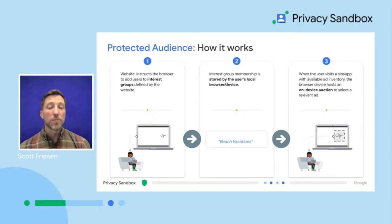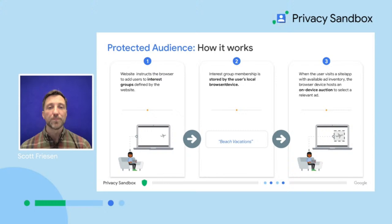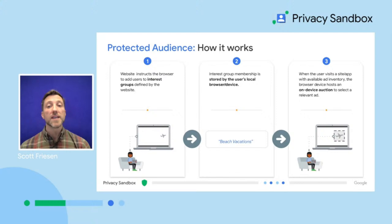Next, let's talk about Protected Audience, formerly known as Fledge. The API enables on-device ad auctions to serve remarketing and custom audiences, again without cross-site third-party tracking. Companies define interest groups — for example, people who have visited the advertiser's site and browsed beach vacations — and then instruct the browser to add users to those interest groups. The interest group membership is stored by the user's local browser. When the user visits another site with available ad inventory, the browser initiates an on-device ad auction to select a relevant ad that matches a user's interest group. This happens on top of the contextual auction, usually executed by ad servers or SSPs, to see if any interest groups want to place a higher bid based on the user's previous engagement.